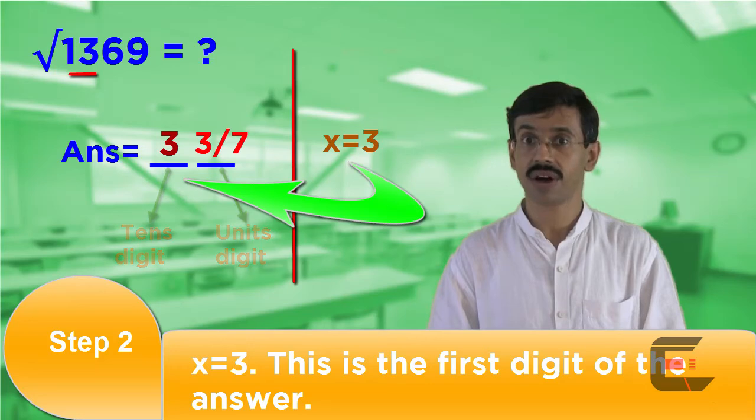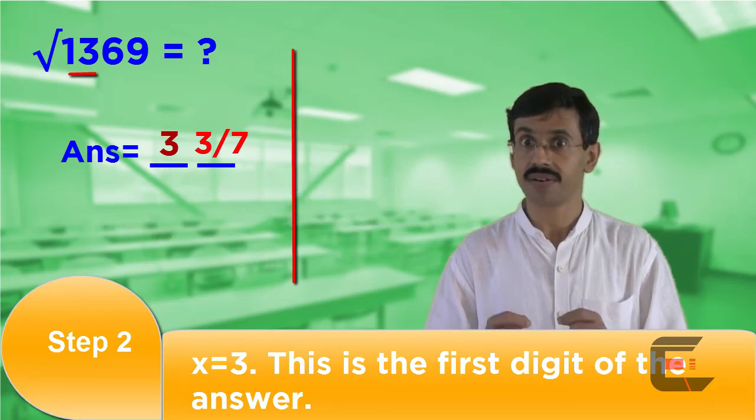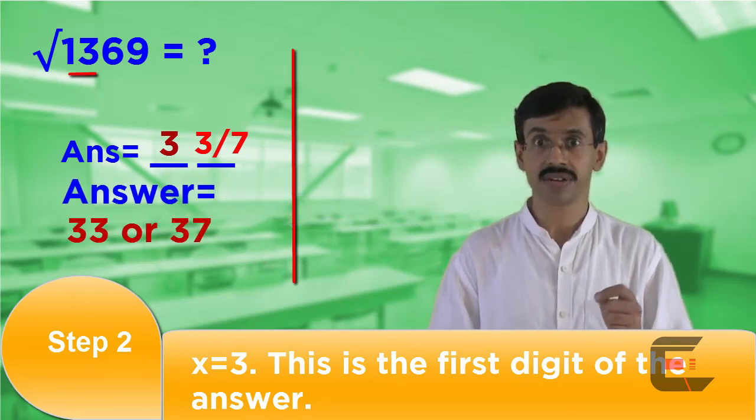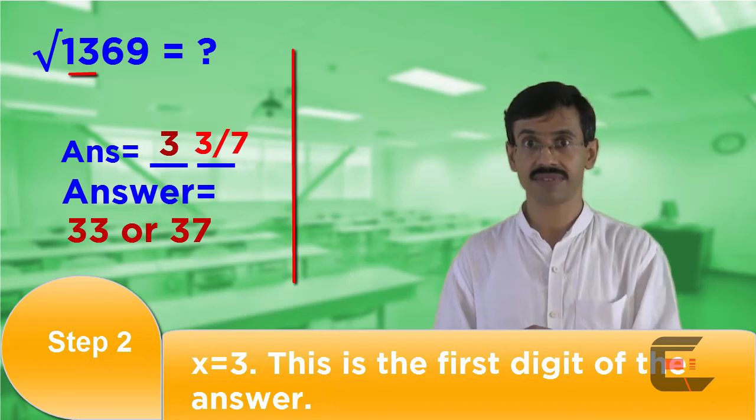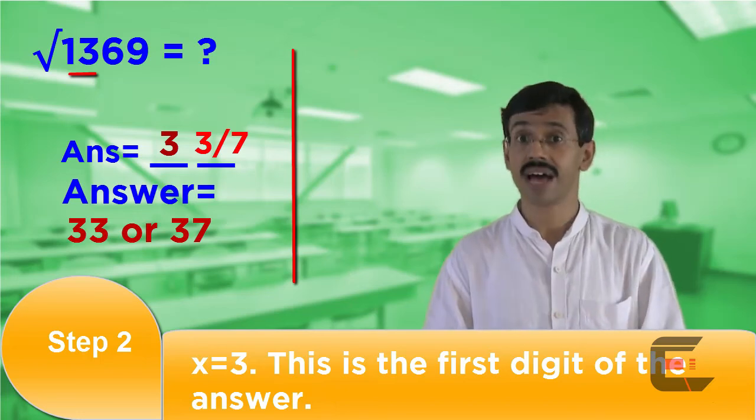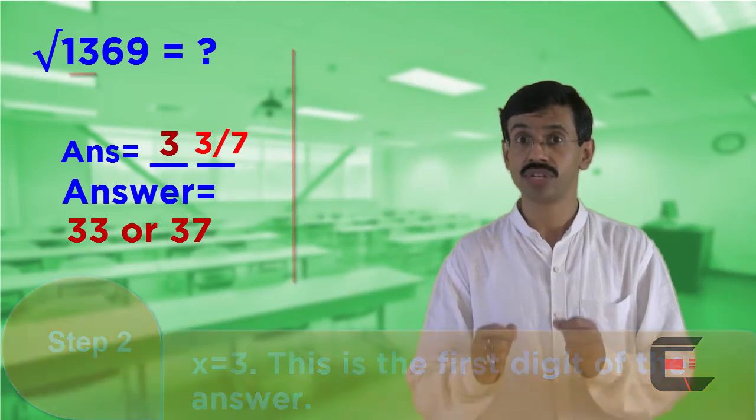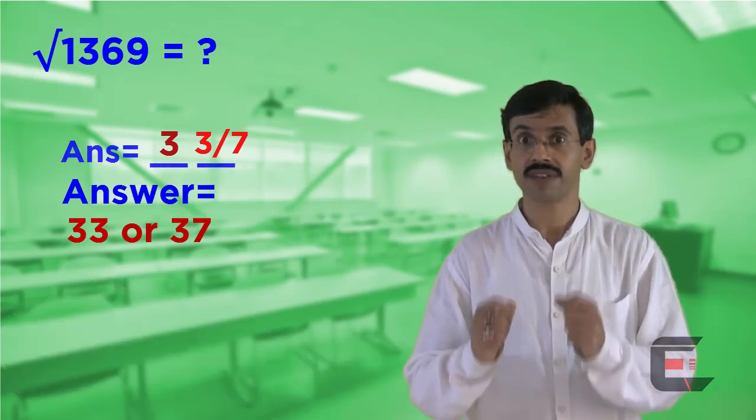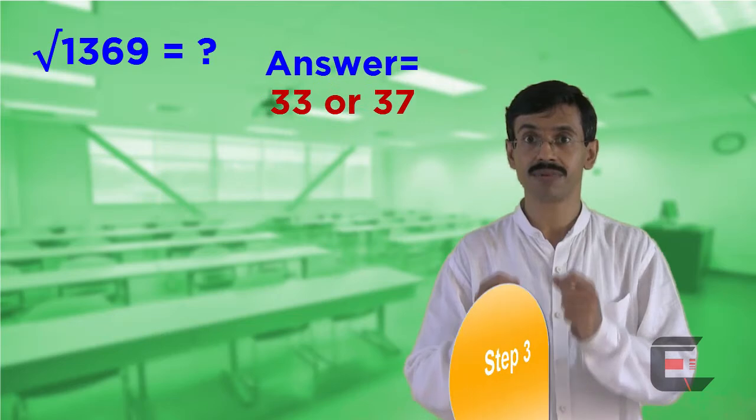This number x that we have identified as 3 is the first digit of our answer. So at the end of step 2, our answer could be either 33 or 37. Now, to confirm which is the correct answer, we have to go to step number 3.